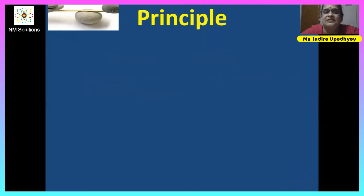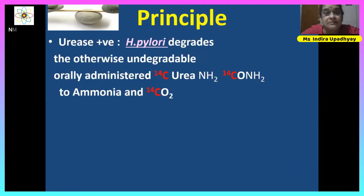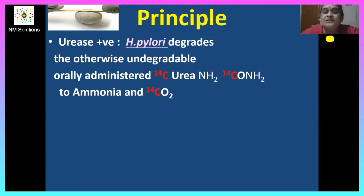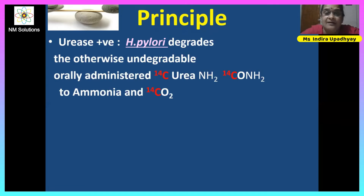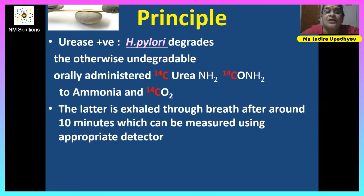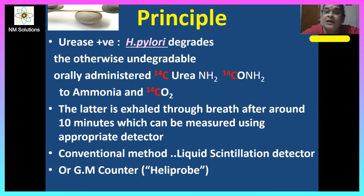The principle of this test: urease-positive H. pylori degrades the otherwise undegradable, orally administered 14-carbon urea (NH2-¹⁴CO-NH2) into ammonia (NH3 or NH4+ ions) and 14-carbon dioxide. This 14-carbon dioxide is exhaled through breath after around 10 minutes and can be measured using an appropriate detector — the conventional method being a liquid scintillation detector, with the most commonly used being the GM counter-based Helipro.